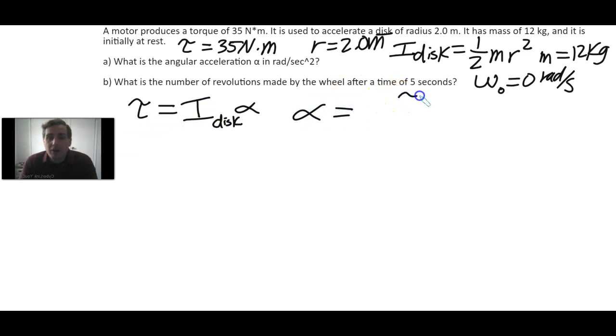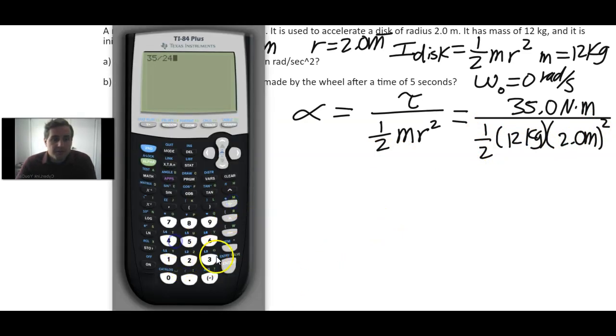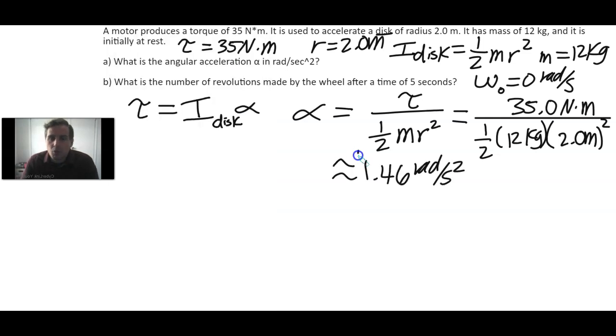So we just need to divide by I to get α. α equals τ divided by I. For the rotational inertia of the disk, it's ½mr². So we substitute in all the values: τ is 35.0 newton-meters, and then ½m, the mass is 12 kilograms, and the radius is 2.0 meters squared. So 35 divided by... 2 squared is 4 times ½ is 2, so that's 24. We get about 1.46 radians per second squared.